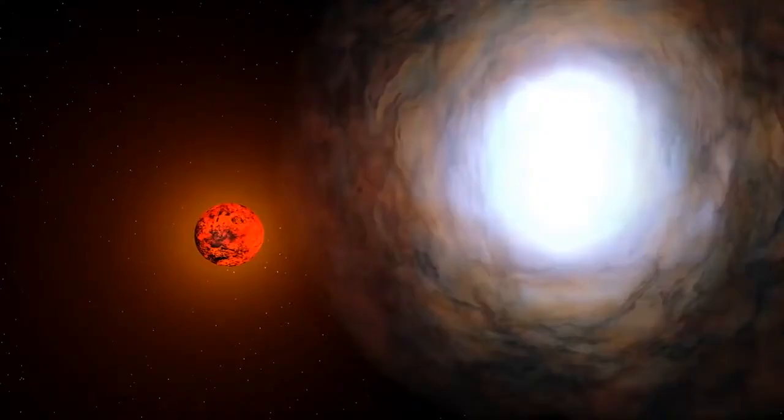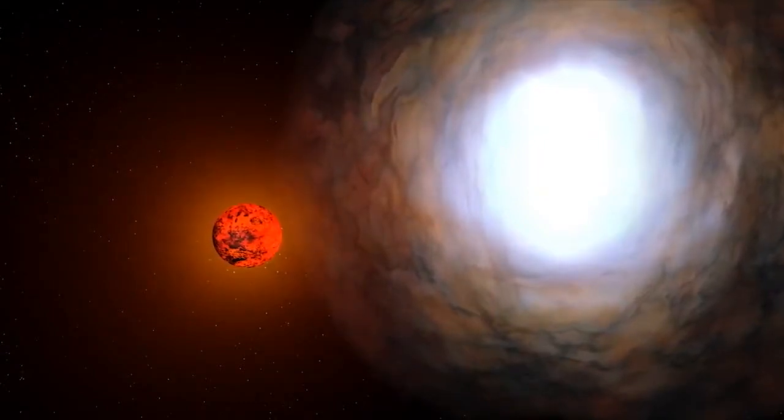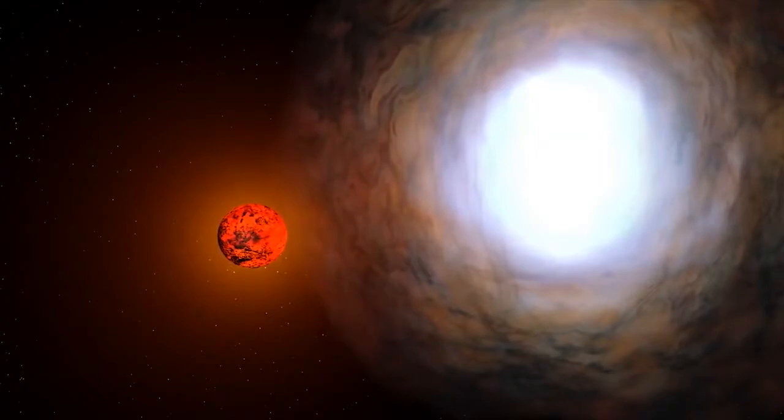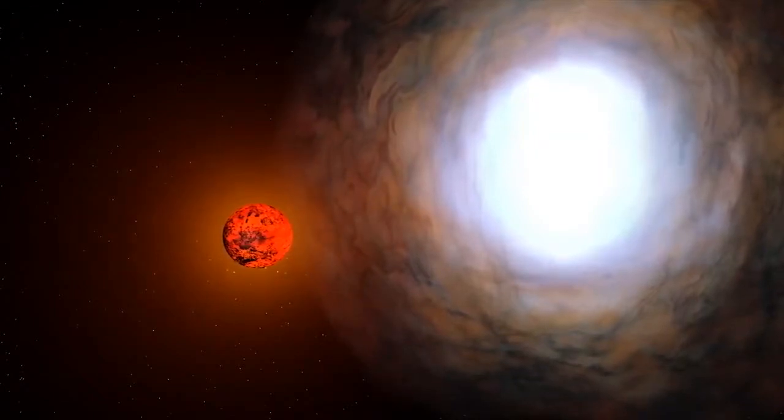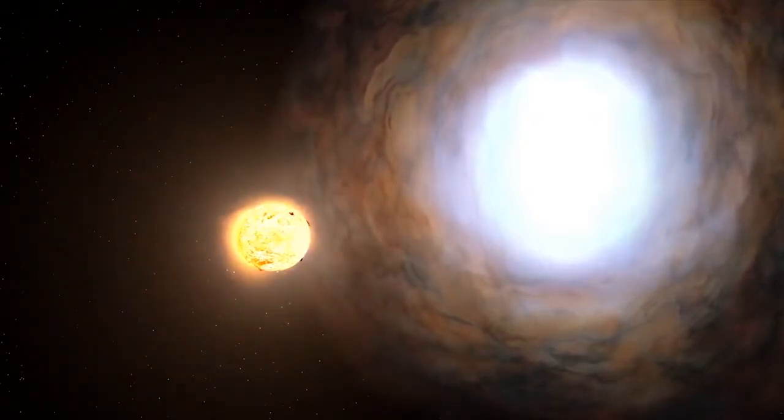Once the red giant hits its limit, it collapses down to its core and explodes out, releasing a ton of material out into space, forming a planetary nebula. This cloud of gas is full of dust and gas similar to the stellar nebula. The sun's explosion will also cause the Earth to completely vaporize.